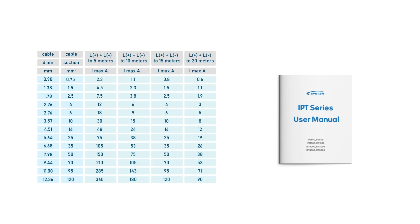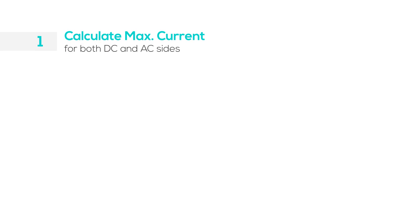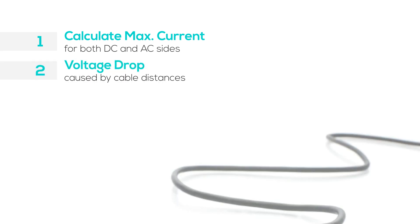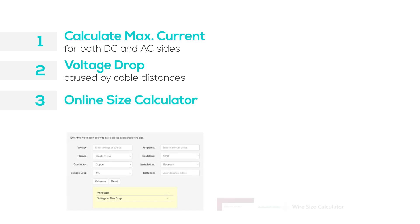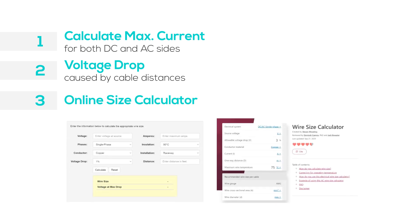Always start with product manuals and wire sizing charts as reference points. If calculating on your own, calculate current for both DC and AC power to find the maximum current. Voltage drop also matters — strive for a voltage drop below 3% for DC and 5% for AC. Online calculators can help you decide the right wire size — you'll need parameters like system current, input or output voltage, distance, voltage drop, and ambient temperature.